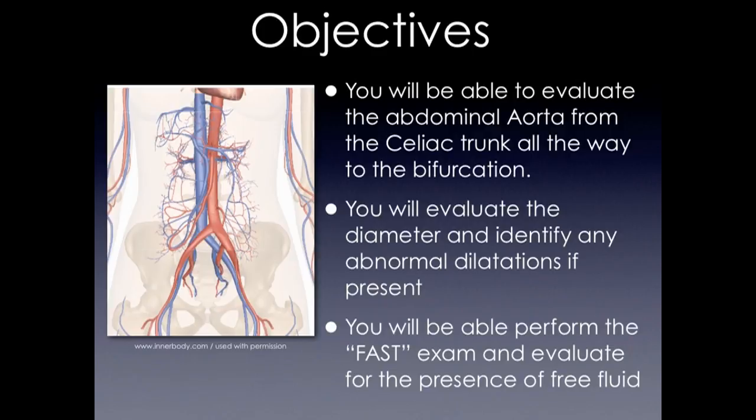Today you're going to be able to evaluate the abdominal aorta from the celiac trunk all the way down to the bifurcation. You're going to check the diameter of the vessel, and we're also going to be doing the FAST exam — the ones we do in trauma — to evaluate for free fluid in the abdomen.